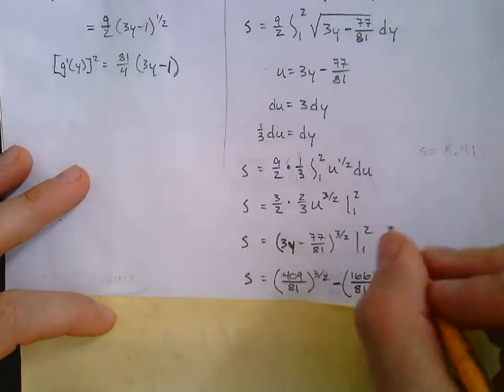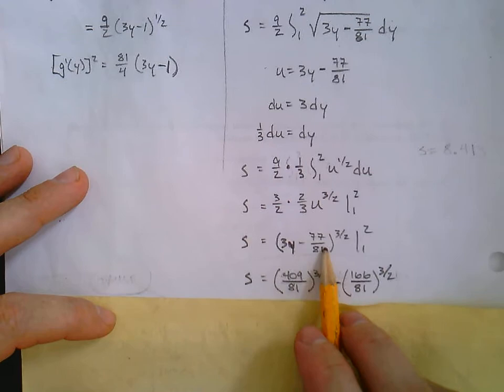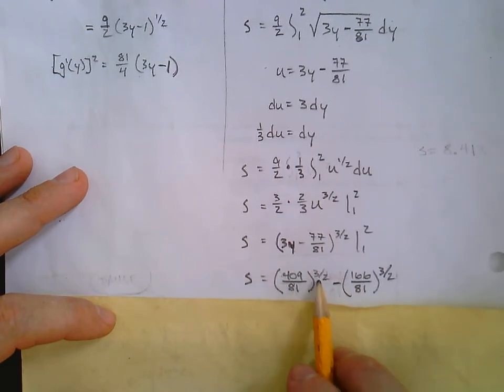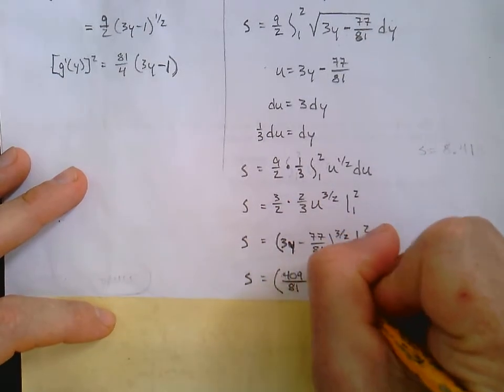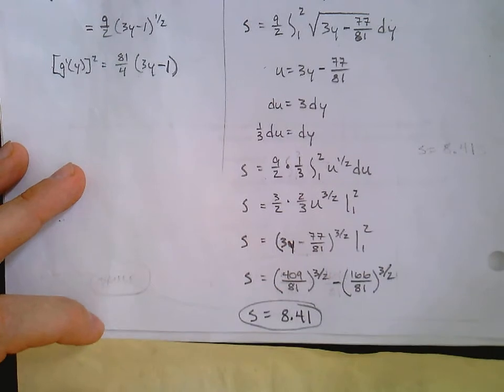And we can clean this up pretty quick. Plugging in the 2, I end up with 409 over 81 to the 3 over 2. Minus plugging in the 1, 166 over 81 to the 3 over 2. Now put that in a calculator to get your final answer.